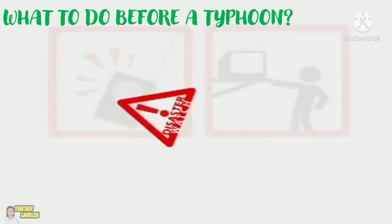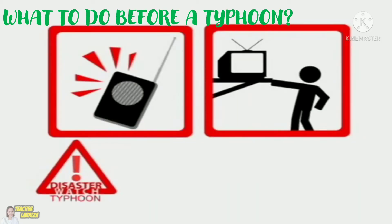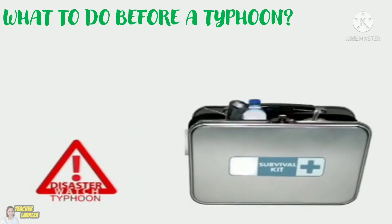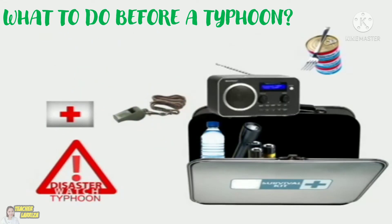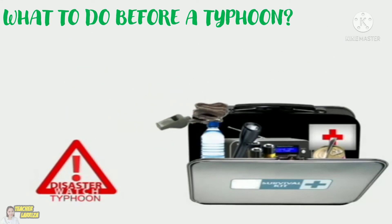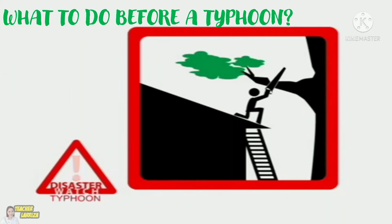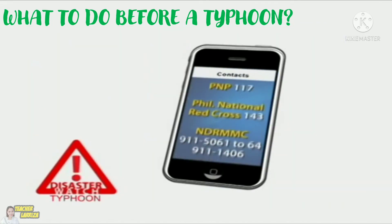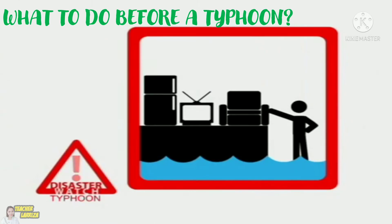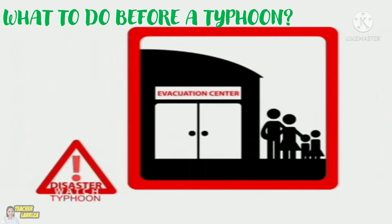Things to remember before a typhoon: Always check the weather condition. Prepare an emergency kit with drinking water, flashlight, battery-powered radio, food, medicine, and other necessities. Trim the branches of trees. Clean and reinforce the roof. List down emergency numbers to call. If flooding occurs in your area, raise items that may get submerged in water. Do not wait for the flood to rise — proceed to the nearest evacuation center.